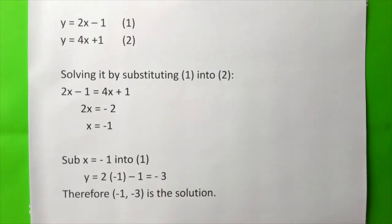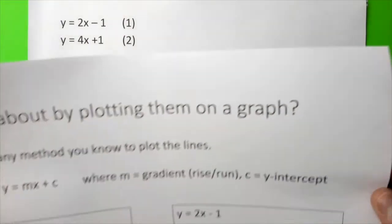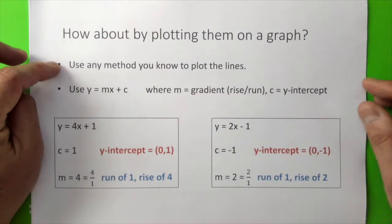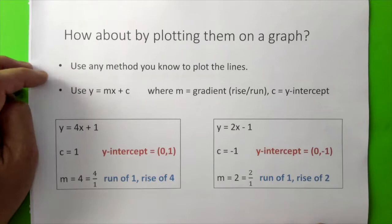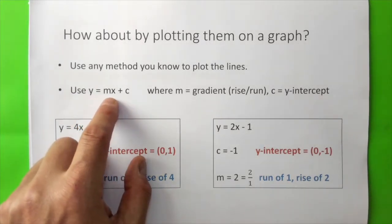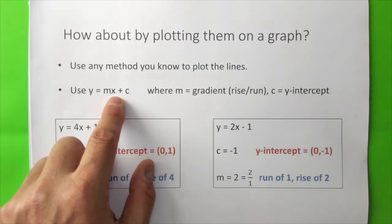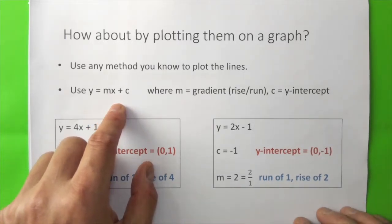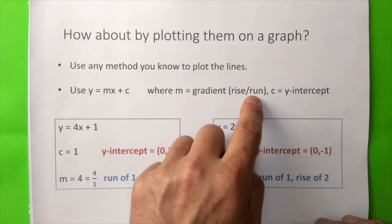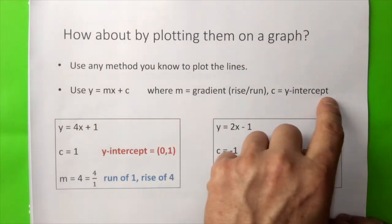Now let's consider how we can solve these simultaneous equations by using a graphical method. You can use any method you want to plot the lines. In this case, I'm going to use the form y equals mx plus c, where m is the gradient, which is the rise over run, and c is the y-intercept.